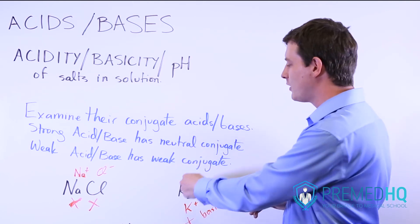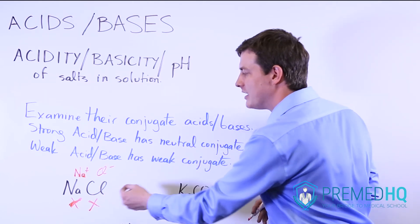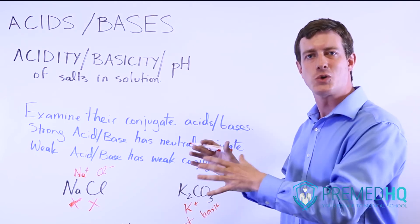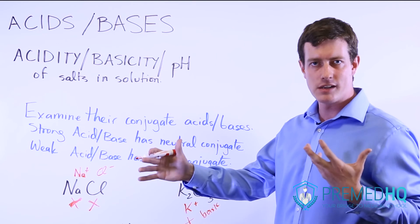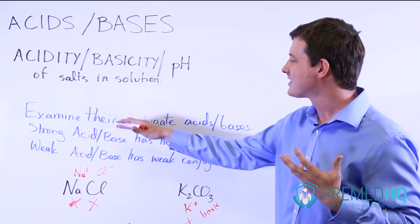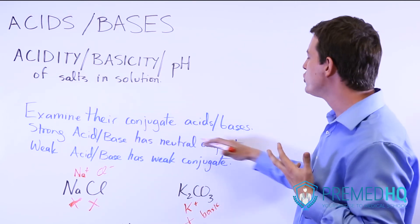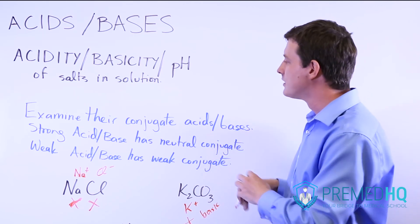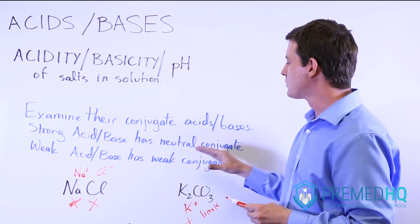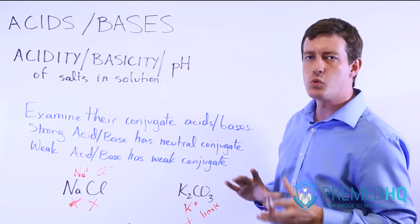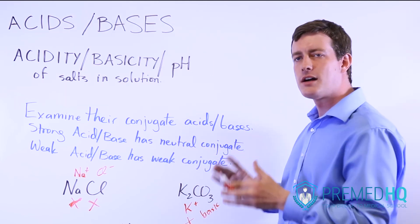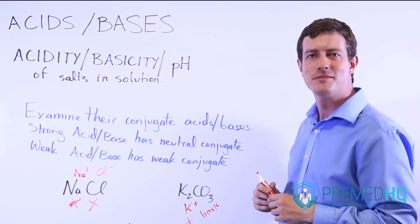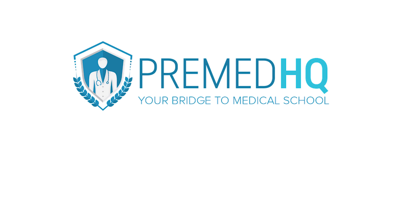So this is how to think about the effect of salts in aqueous solution: look at the conjugates and decide whether a species is the conjugate of something classified as a strong acid or base, or whether it's the conjugate of something weak. Strong acids and bases have neutral conjugates that aren't effective as an acid or base. Whereas a weak acid or base will have a conjugate that is weak, but still has some ability to act as a base or acid when put into solution.